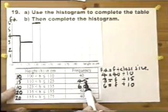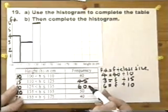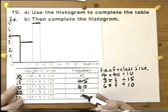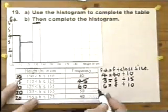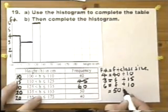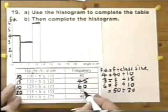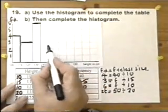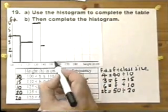We can use the frequency density column to work out the frequency column and vice versa — going back and forth. The table is now completed. We've used the histogram to complete the table, and now we use the table to complete the histogram. For the fourth group (135–155), frequency density = 50 ÷ 20 = 2.5. So that bar goes up to 2.5.